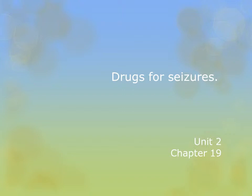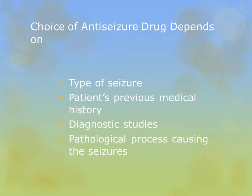Drugs and procedures, unit 2, chapter 19. When deciding on pharmacologics for seizure control, a lot depends on the type of seizure the patient is having — tonic-clonic, absence, myoclonic, and others. We also look at the patient's previous medical history, what diagnostic studies tell us, and the pathologic process causing the seizures. A seizure from trauma might be treated differently than an idiopathic seizure.